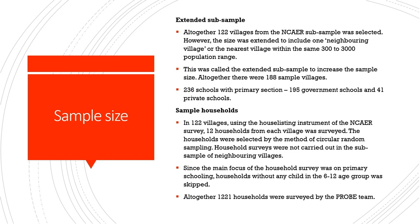Household surveys were not carried out in the subsample of neighboring villages added as part of the extended subsample, because the house listing instrument was not available for those villages. But for the 122 NCAER villages, household surveys were carried out, providing information about parents' views on elementary education. Since the main focus was on primary schooling, households without any children in the age group of 6 to 12 were excluded. Altogether, 1,221 households were surveyed.